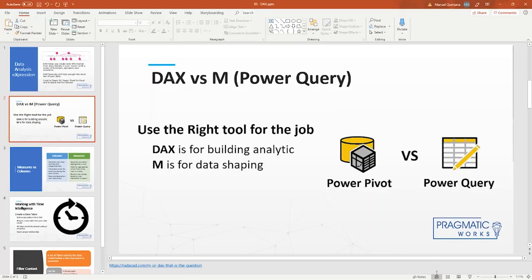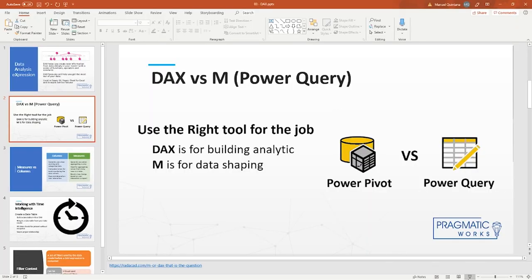To summarize: use the right tool for the job. DAX is more analytically focused — building calculations for analytics purposes. M language, related to Power Query, is more for data shaping and data transforms — fixing your data as you pull it in. They both have their own use cases and you pick the one that makes the most sense for each scenario.